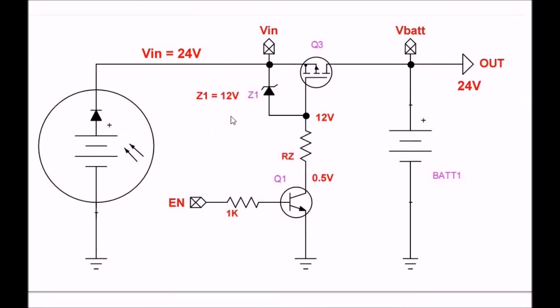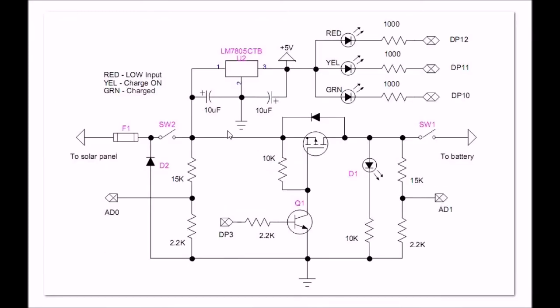You could also put the zener up here across the gate source, and a 12 volt zener will assure that no more than 12 volts is ever created between the gate and the source. And you could have put the resistor down here. And that's pretty well all there is to it. So thanks for listening, I hope that was a little more informative on these circuits. Like I said, the Arduino code and the web page for this project will be listed below. Thank you for listening.